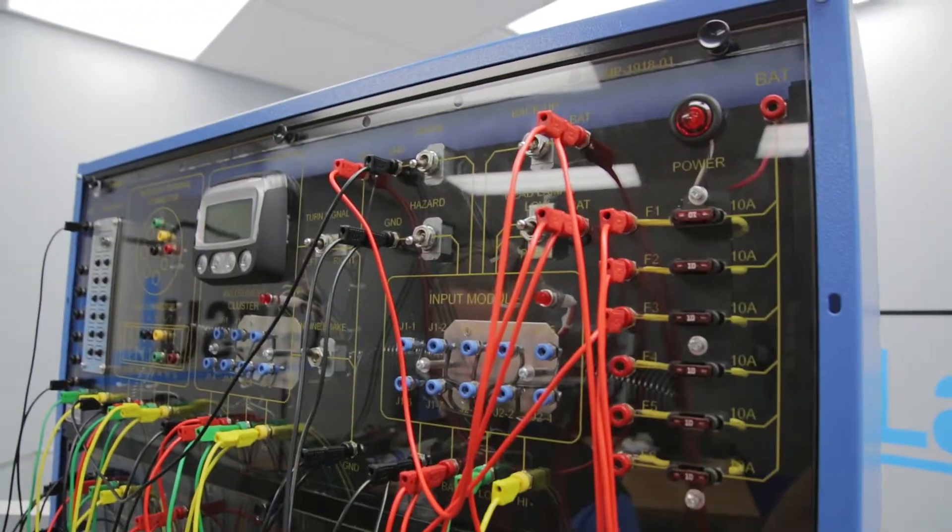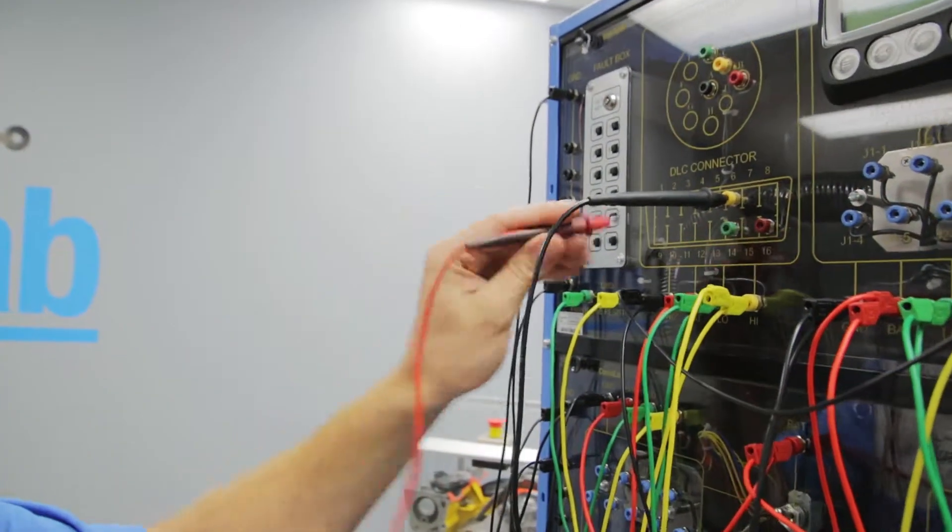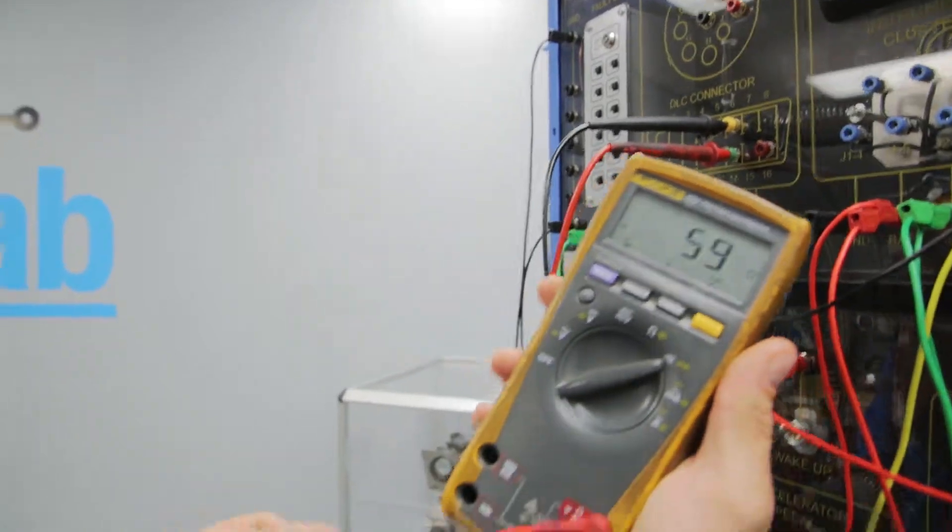So with power off, what we can do is measure between CAN high, CAN low, and again we're supposed to get 60 ohms.